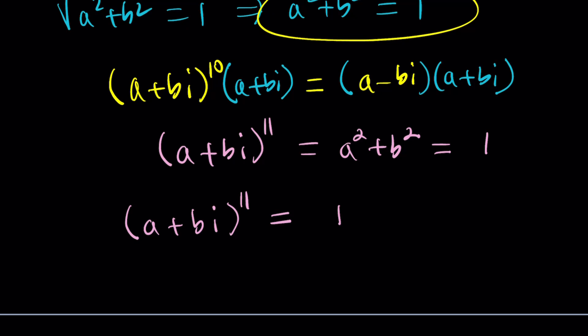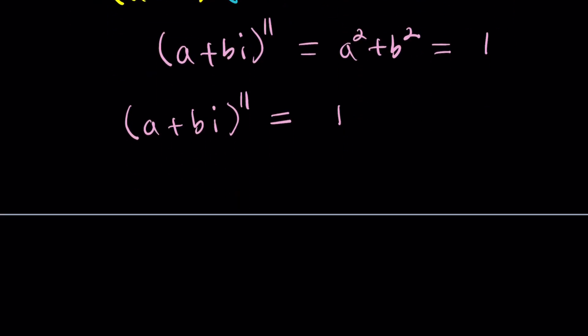Obviously, the super-duper complicated, brute-forcey, horrible method would be expand this, like a to the 11 plus 11 choose 1, a times bi to the 10, so on and so forth. Is that right? No. It's the other way on, a to the 10th. And then bi. And then you're going to get 11 choose 2, a to the ninth, bi to the second, which is b squared, i squared, which is negative b, so on and so forth. There's going to be 12 terms, and then finally to get 1, you have to set the real part equal to 1 and the imaginary part equal to 0, but that's super-duper painful. You don't need to do any of that, because this equation is just awesome.